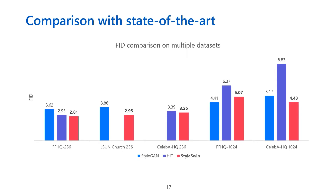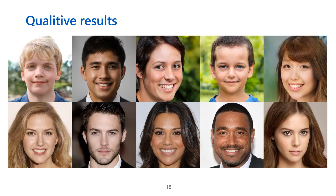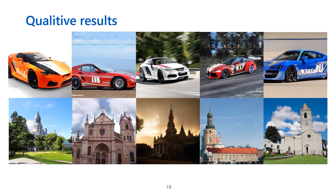We compare our StyleSwin with state-of-the-art Conv-based StyleGAN as well as recent transformer-based methods. Our StyleSwin achieves state-of-the-art FID scores on all datasets, but is only slightly worse than StyleGAN on FFHQ 1024. It is also the first time a transformer-based GAN achieves comparable or even better performance than StyleGAN on high-resolution image generation. The qualitative results show that our StyleSwin can synthesize diverse images across various datasets with compelling quality, and is capable of modeling complex thin structures like churches and cars.